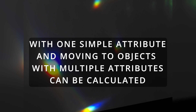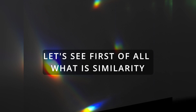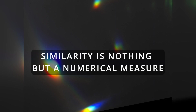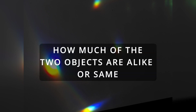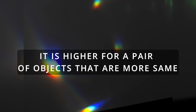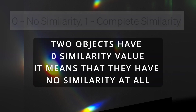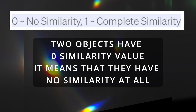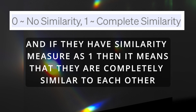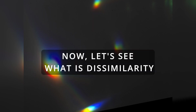First, what is similarity? Similarity is a numerical measure which tells us how much two objects are alike or the same. It is higher for a pair of objects that are more similar, and it is usually non-negative and between zero and one. If two objects have zero similarity it means they have no similarity at all, and if they have a similarity measure of one it means they are completely similar to each other.